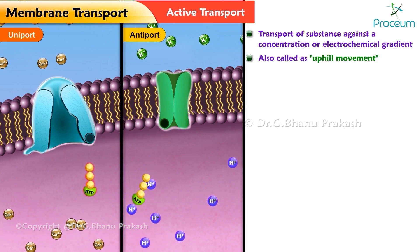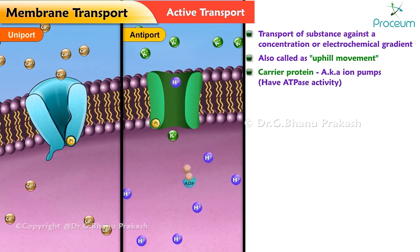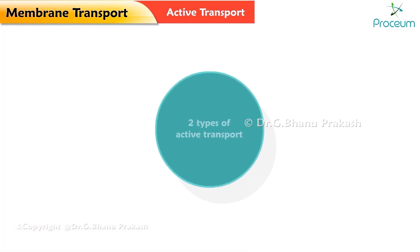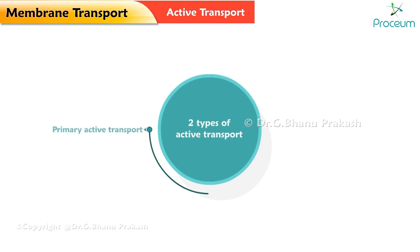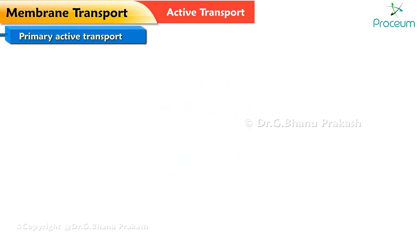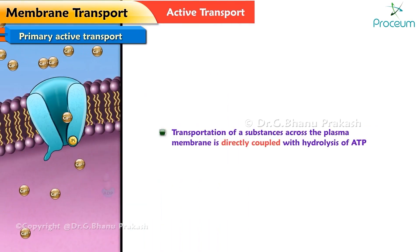Active transport requires energy or ATP and a carrier protein. These carrier proteins are known as ion pumps, which have ATPase activity. There are two types of active transport: primary active transport and secondary active transport. Let's discuss those two in a little more depth.